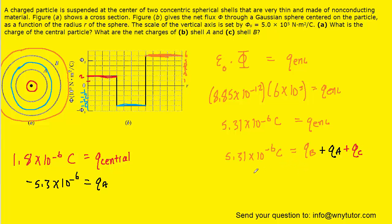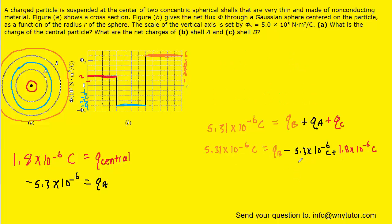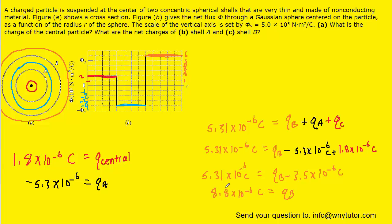Plugging in the values for Q_C and Q_A into our equation, we combine the two like terms on the right-hand side. Adding 3.5 times 10 to the minus 6 Coulombs over to the other side, we get approximately 8.8 times 10 to the minus 6 Coulombs for the amount of charge on shell B. This is the correct answer to Part C.